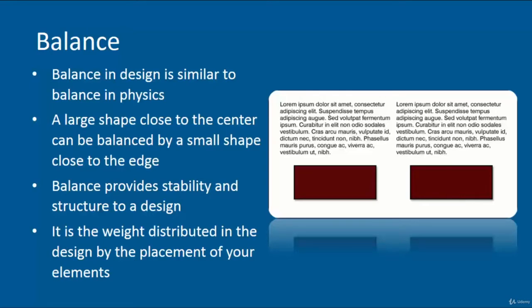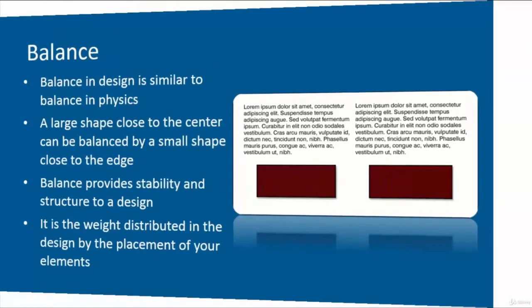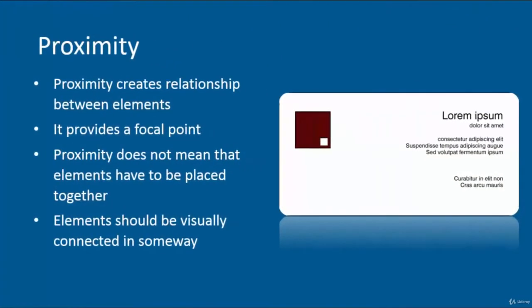Then comes proximity. Proximity literally means closeness, so it creates a relationship between elements. For example, it provides a focal point. It does not mean that elements have to be placed together by the way, even though the word proximity implies closeness.